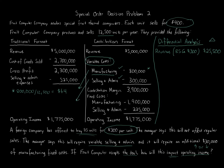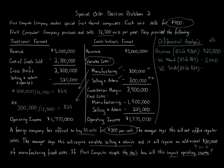We do a similar calculation for selling and administrative: $300,000 divided by 12,500 units gives us $24 per unit. We subtract variable manufacturing costs of 85 units × $64 = $5,440, and variable selling and administrative costs of 85 units × $24 = $2,040.